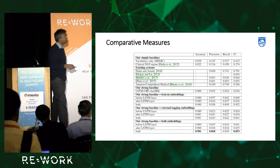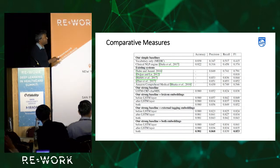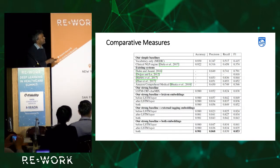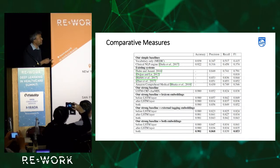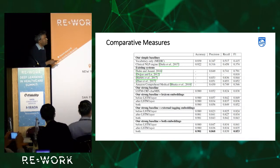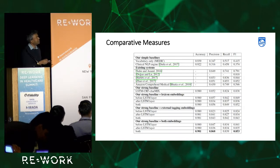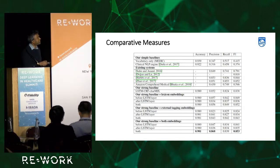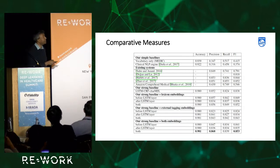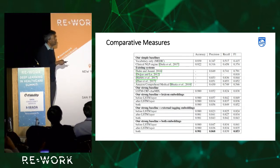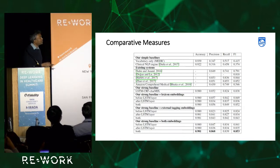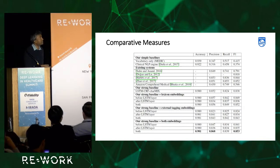For the final results, we compared with various baselines: vocabulary only using the MEDIC ontology, the clinical NLP engine only, existing work with an LSTM-CRF structure without domain knowledge, and Amazon Medical Comprehend. Our strongest baseline — the character mix model without domain knowledge — improves when we add lexicon embeddings, and achieves the best performance when we add both domain knowledge embeddings before and after the LSTM layer.